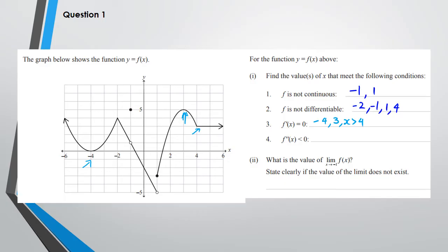Next, where f''(x) < 0 — we're looking for where the graph is concave down. You can see that concave down is between these two points, and we can write this as between x = 1 and x = 4. Our final part asks for the limit as x tends to -1. As x tends to -1, the y value is heading towards positive 1, so the answer is 1. Two correct answers gets you an achieved, three correct gets you a merit for this question.